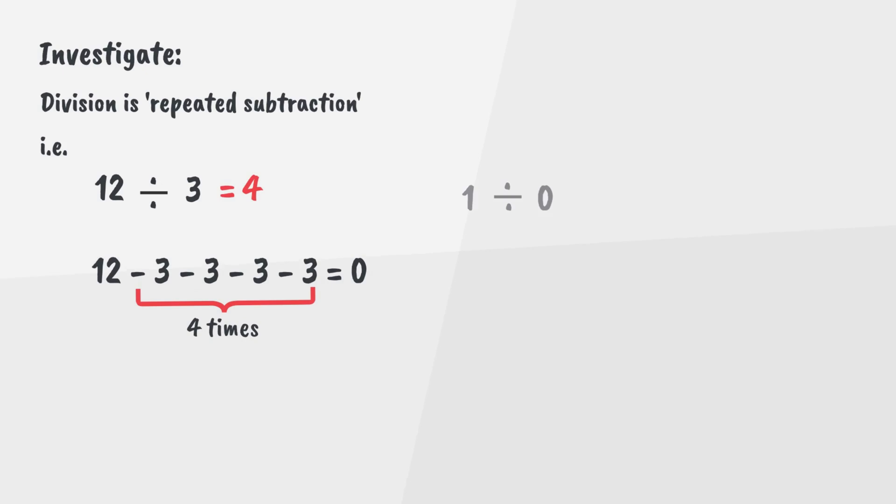However, if we divide by zero, for example, 1 divided by zero, how many times can we take away zero from 1 until we reach 0? Now, this lack of clarity may lead us towards equating the string of zeros we see as equal to infinity, but this alone doesn't guarantee the argument. Let's further investigate.